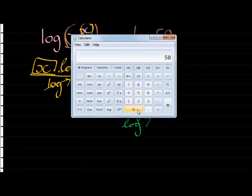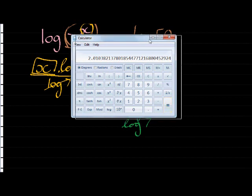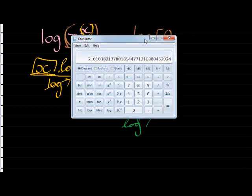50 log is 1.606 something, and divided by 7, log gives me 0.84 for log 7. And then my final answer actually is 2.0103.